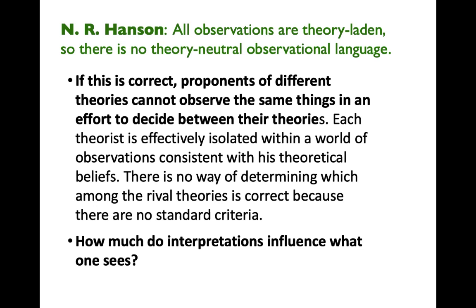R. Hansen makes the case that all observations are theory-laden, so there is no theory-neutral observational language. To say that observations are theory-laden is to say there are no observations which do not have assumptions based already on theoretical explanations. If this is correct, proponents of different theories can't observe the same things — each theorist is effectively isolated within a world of observations consistent with his or her theoretical beliefs. There is no way of determining which among rival theories is correct, because there are no standard criteria. How much do interpretations influence what one sees? What is this — is it a rabbit? Is it a pelican? Backing away farther, still rabbits and pelicans. Back even farther, now we see antelopes.